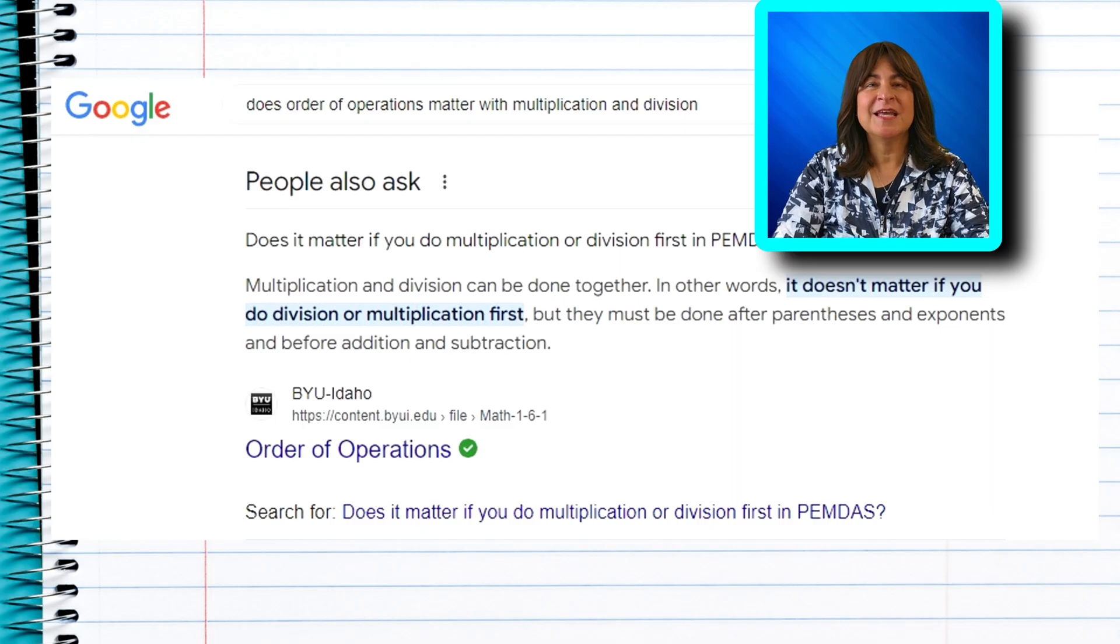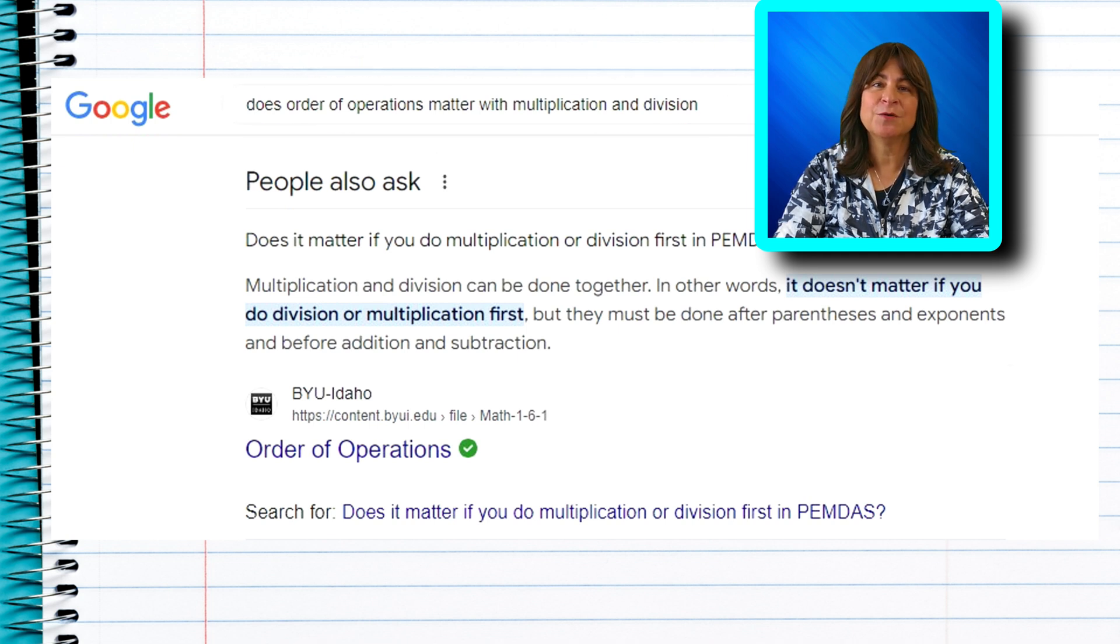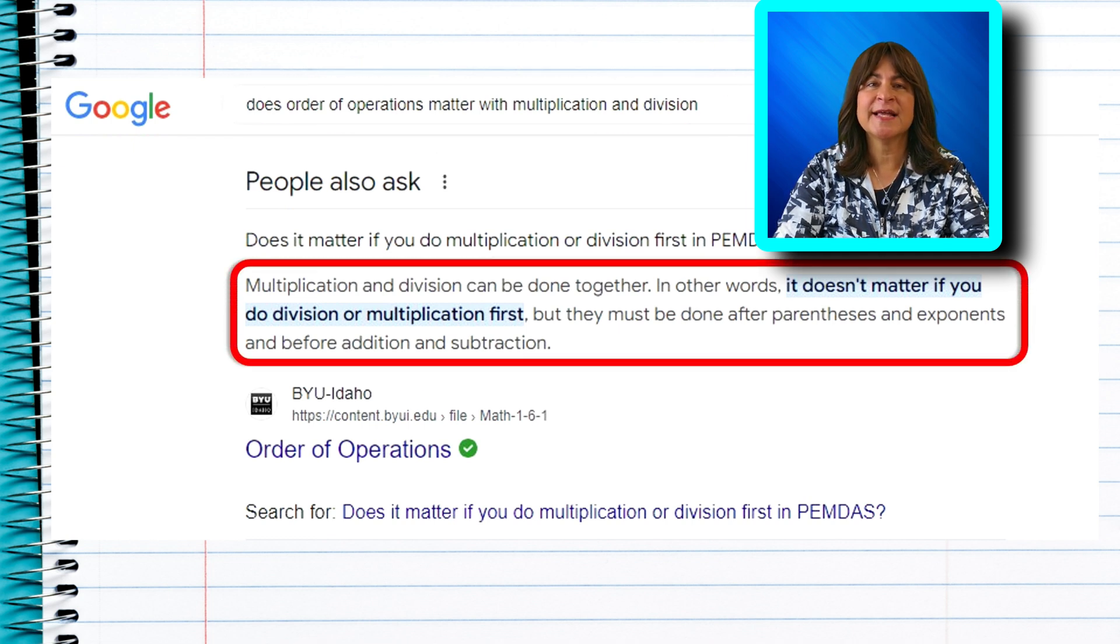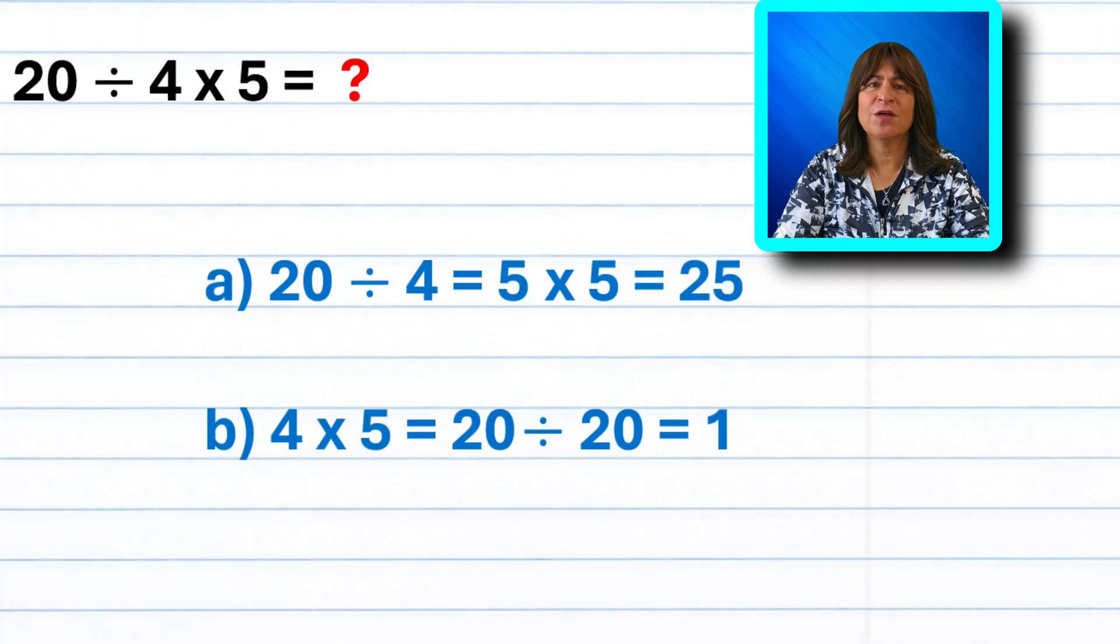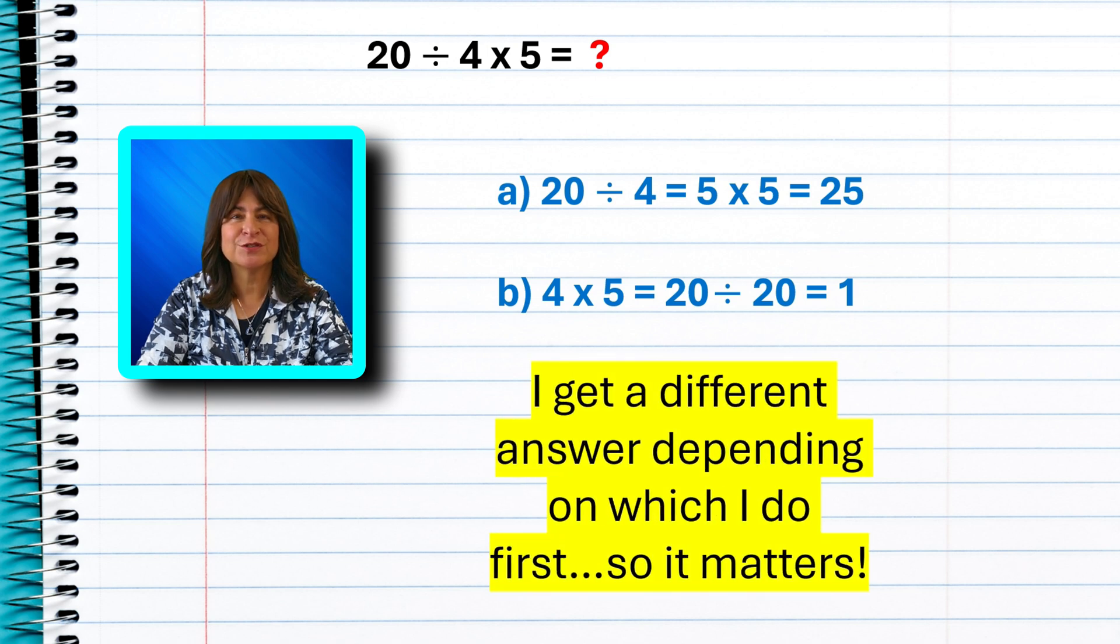But wait, if you Google does it matter if you do multiplication or division first in PEMDAS, here is what you get, or what I got. The first answer that popped up on my screen says very clearly, it doesn't matter if you do division or multiplication first. What? But of course it does. We just saw that if I divide first, I get 25, but if I multiply first, I get one. So of course it matters. I get a different answer depending on which I do first, so it matters.